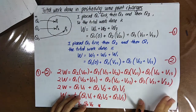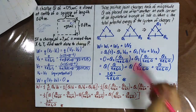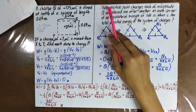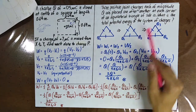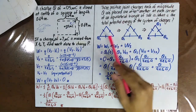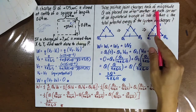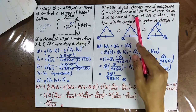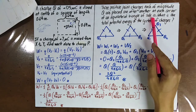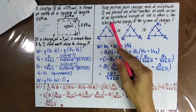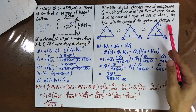Using this formula, you can find the total work done in positioning point charges. For example: three positive point charges, each of magnitude q, are placed one after another at each corner of an equilateral triangle of side a. What is the total potential energy of the system?